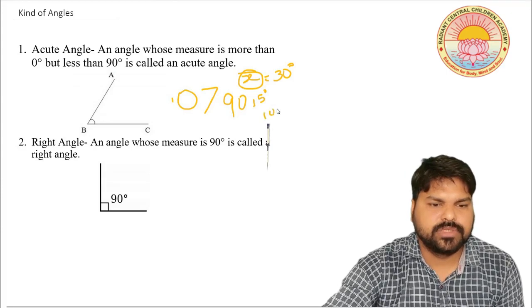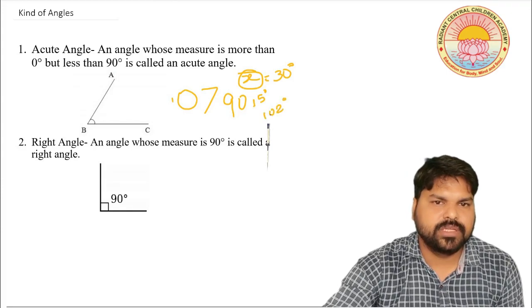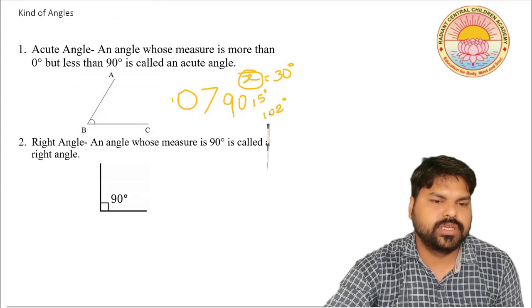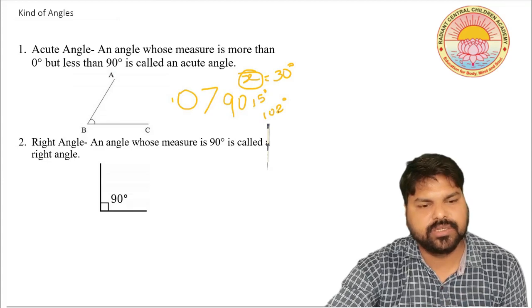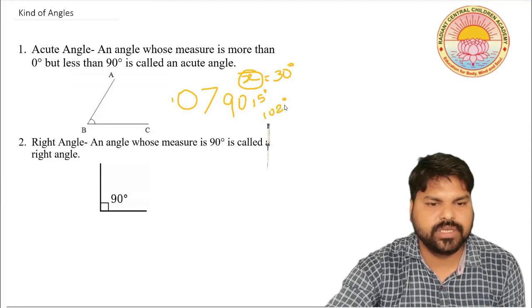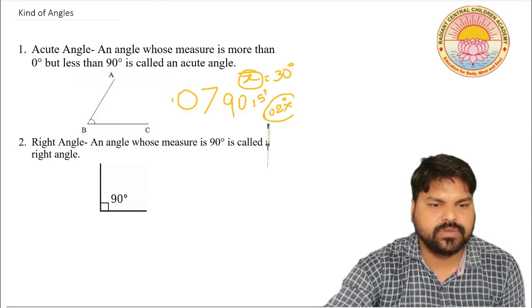If we see an angle of 102 degrees, you can see that it is greater than 90 degrees. So it is not acute. If you ask whether it is acute, then you can say no, it is not acute.